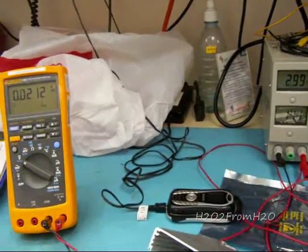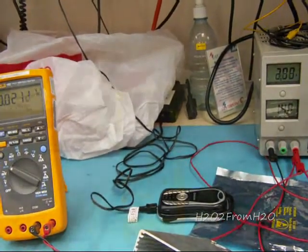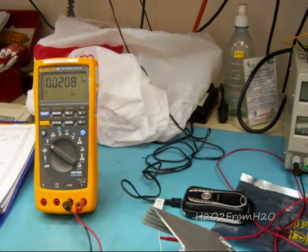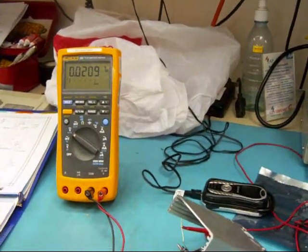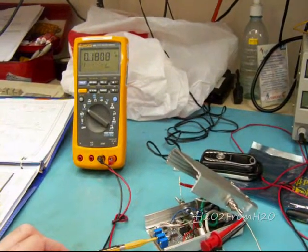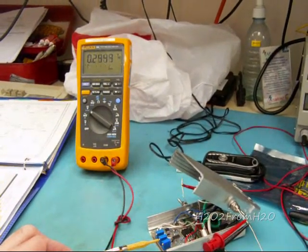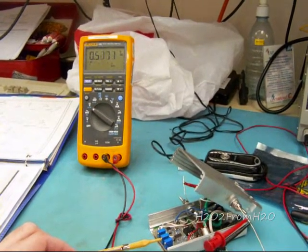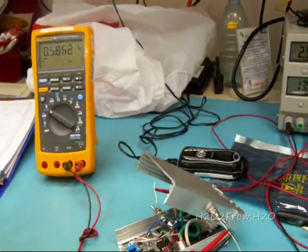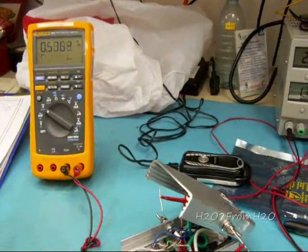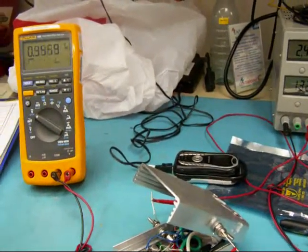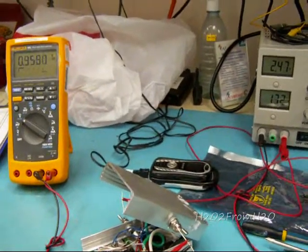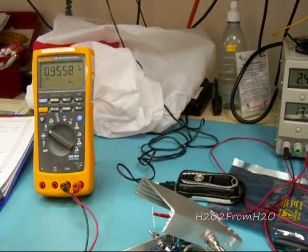But then as the cell heats up and current limiting kicks in, as the current limiter kicks in, the voltage drop across the MOSFETs will increase. And that's where the heat is actually generated, is that voltage drop in the current. So ideally you don't want it to be, you don't want your cell to be heating up too much.